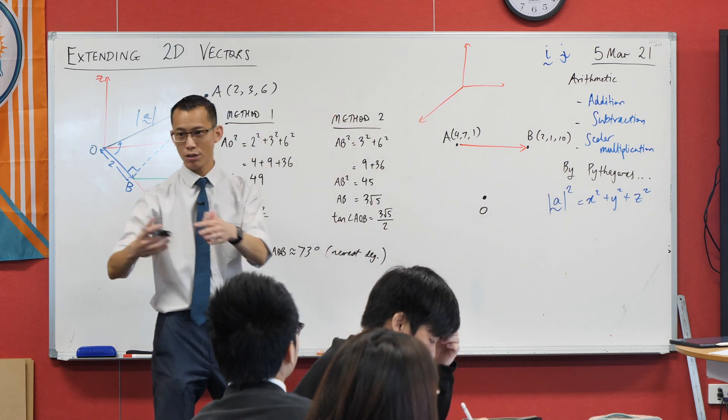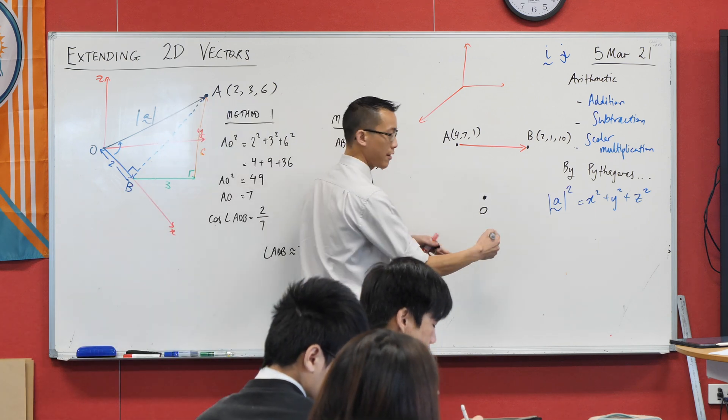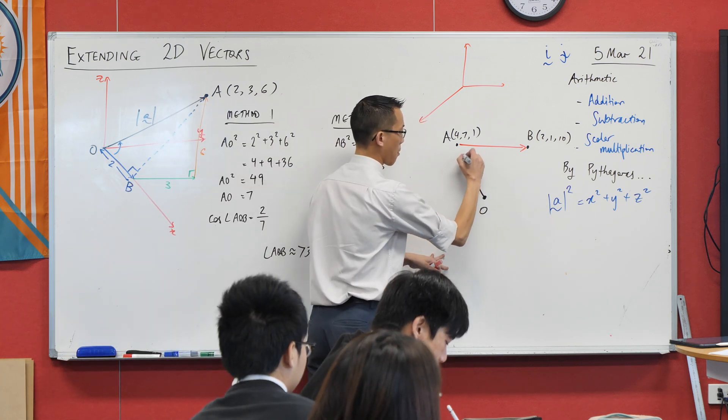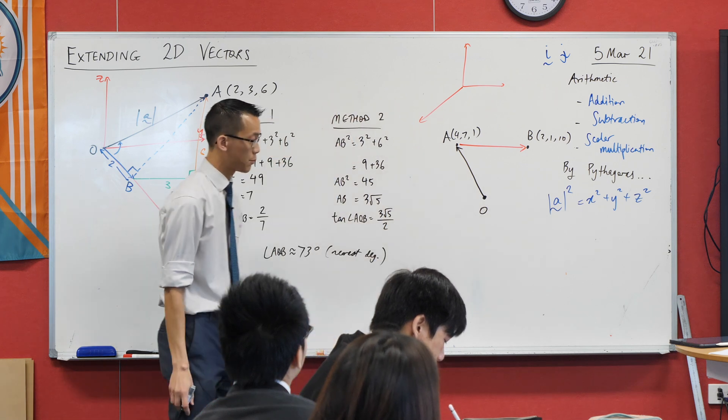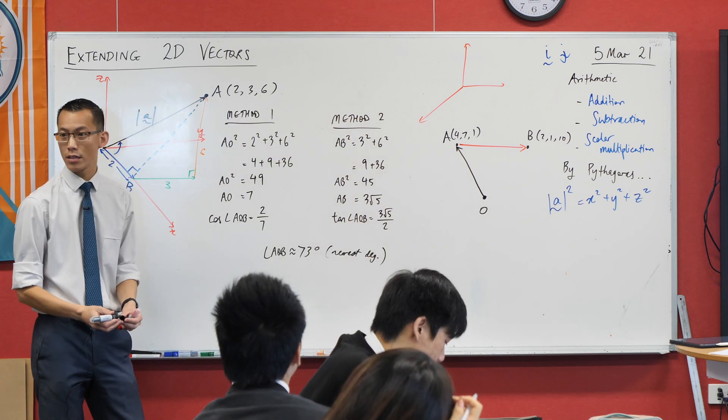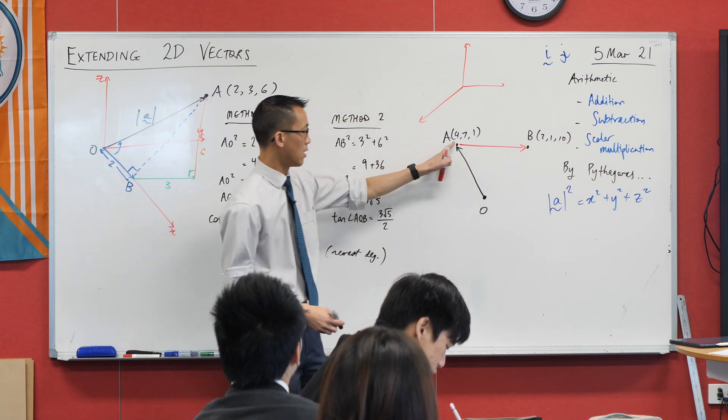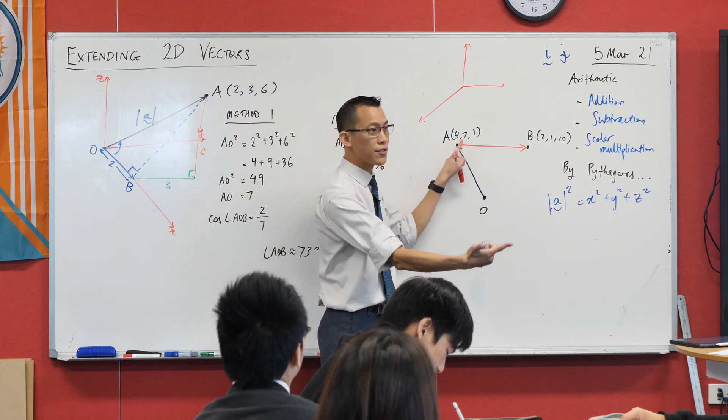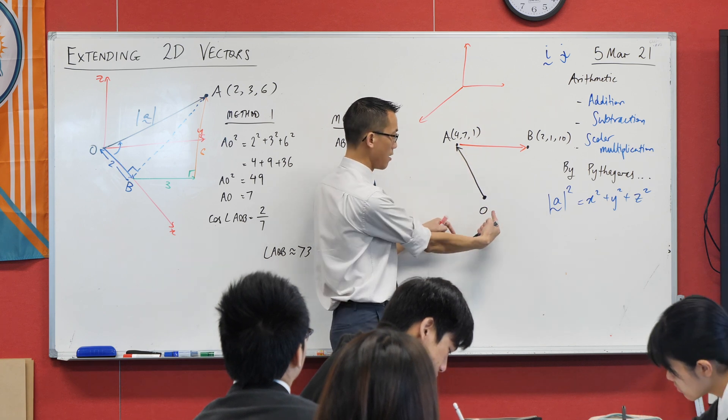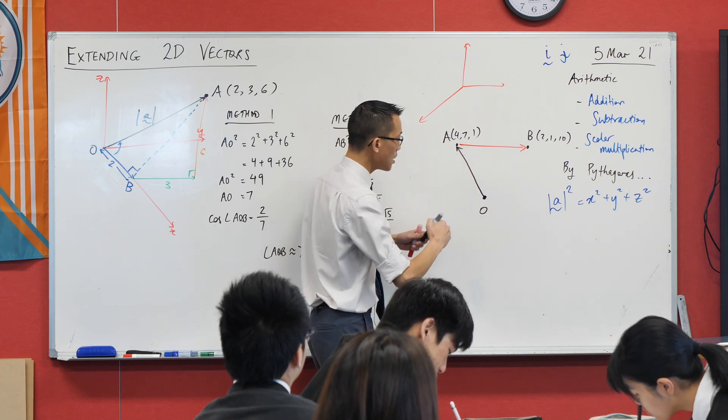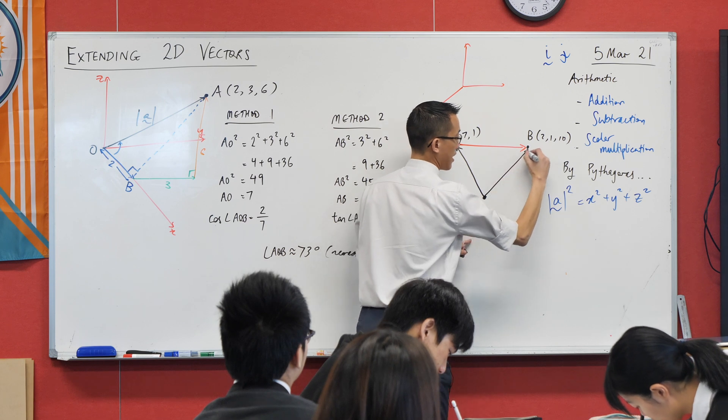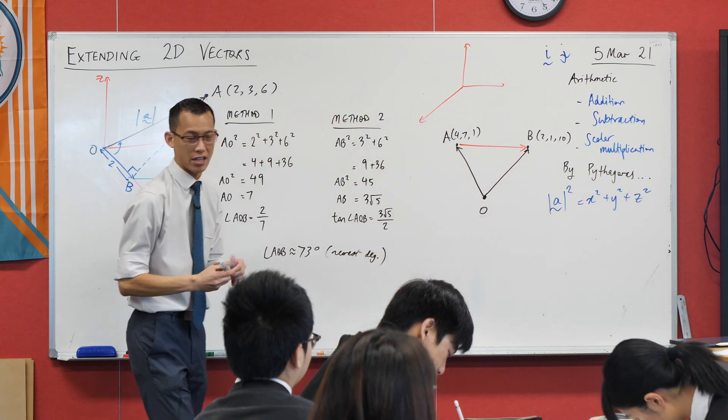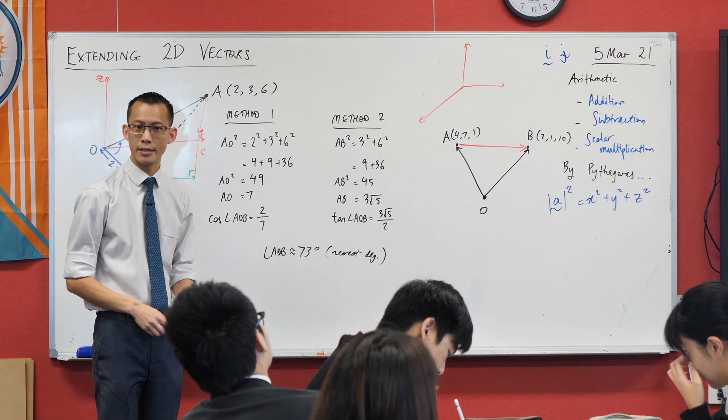So if you come back to that original table that we did, you could state, for example, what is in component form or column form if you like, what is OA? It's a trivial thing to state. It would be, in component form, 4i plus 7j plus k. That would be vector OA. Do you agree? You could also similarly state OB in exactly the same way, just look 2, 1 and 10.